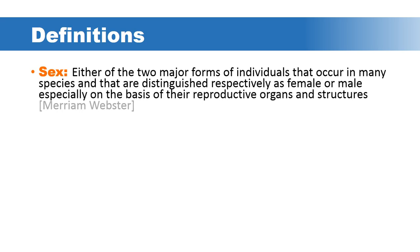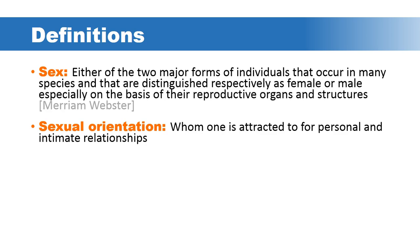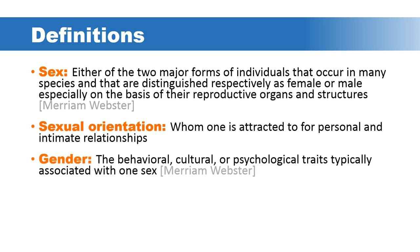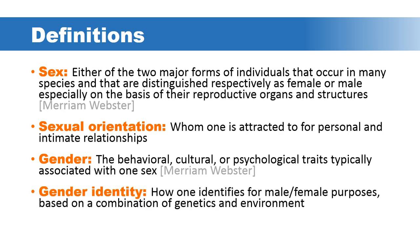There are some important definitions to start with. The first is largely biological, from the Merriam-Webster dictionary: sex is defined as either of the two major forms of individuals that occur in many species, distinguished respectively as female or male, especially on the basis of their reproductive organs and structures. Sexual orientation is defined as whom one is attracted to for personal and intimate relationships. Gender is the behavioral, cultural, and psychological traits typically associated with one's sex. And gender identity is how one identifies for male or female purposes based on a combination of genetics and environment.